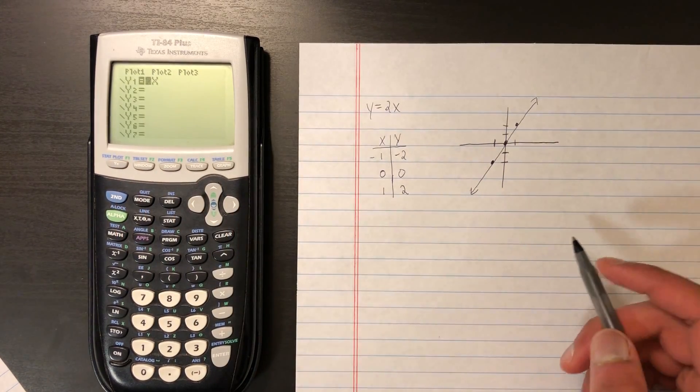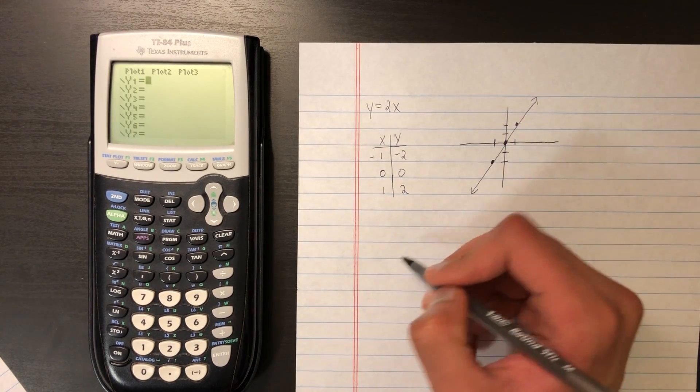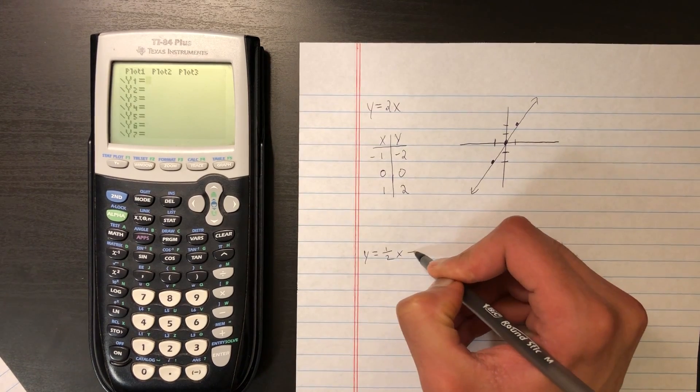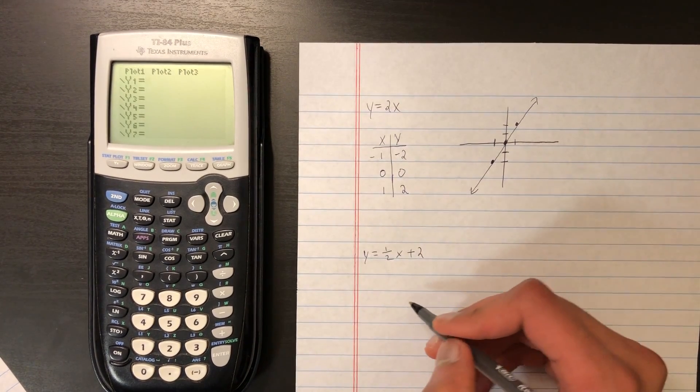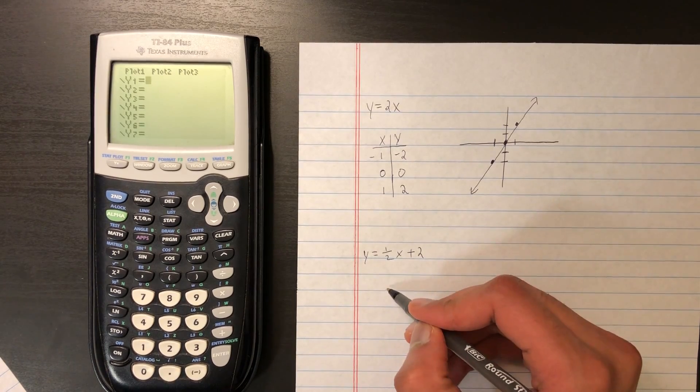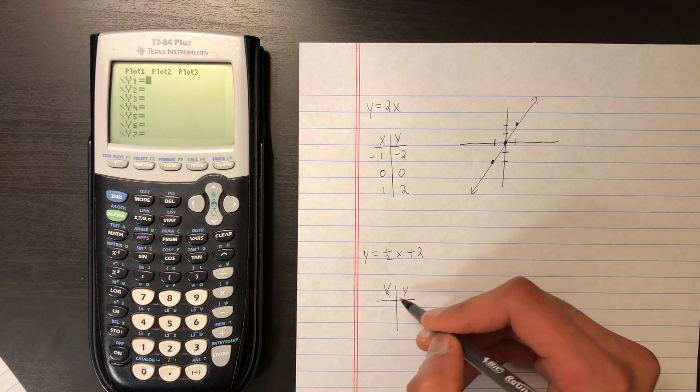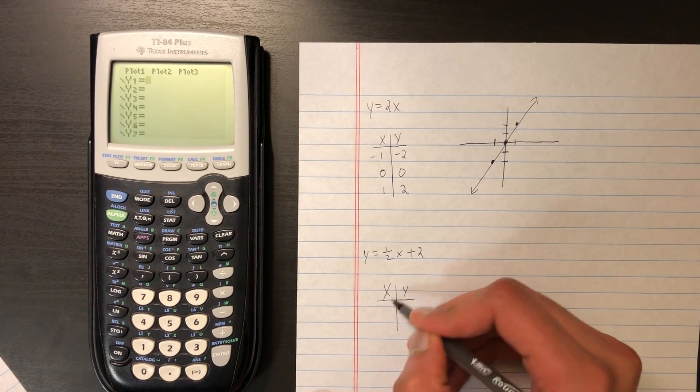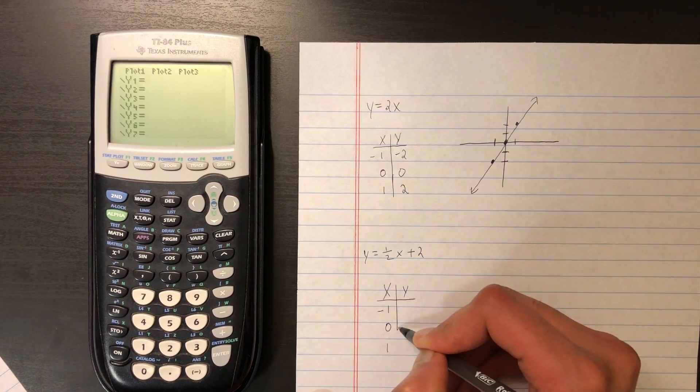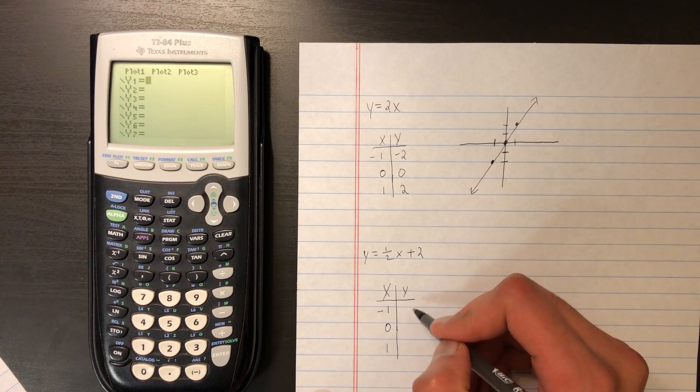Let's do another example. Let's do y equals 1 half x plus 2. So same thing here. Let's create an xy table. And for our x values, let's use negative 1, 0, and 1.